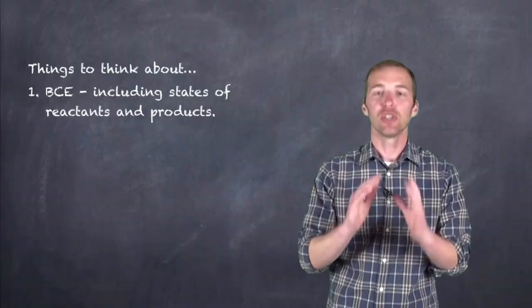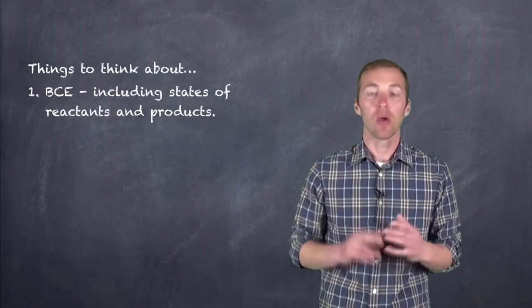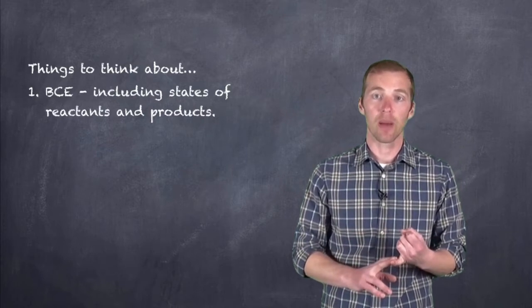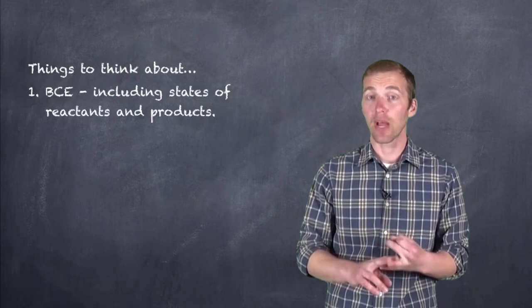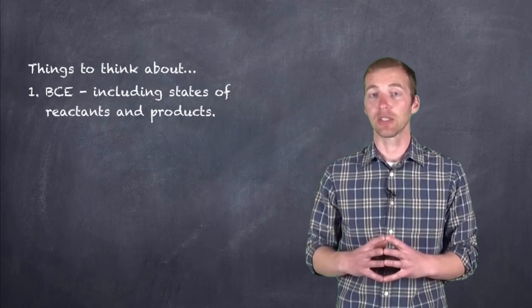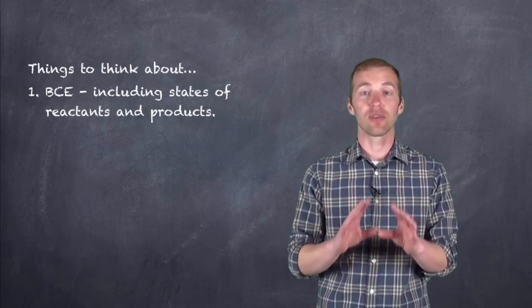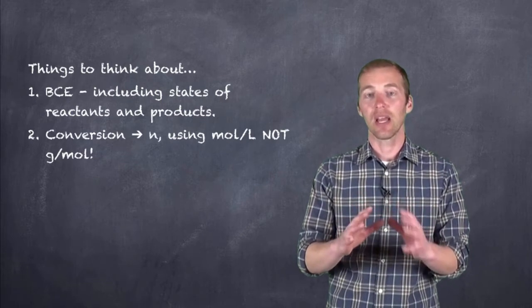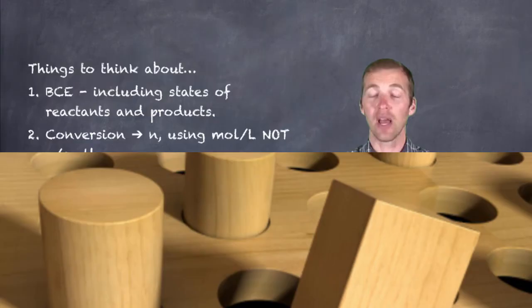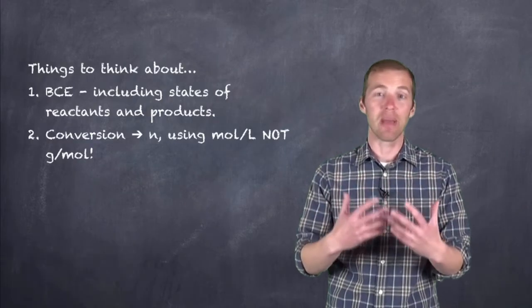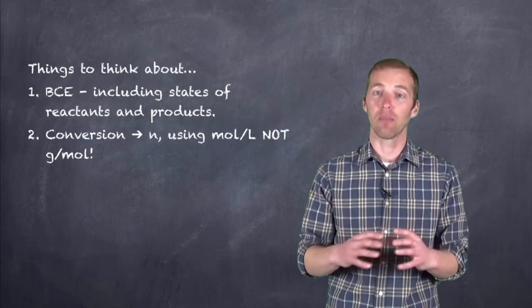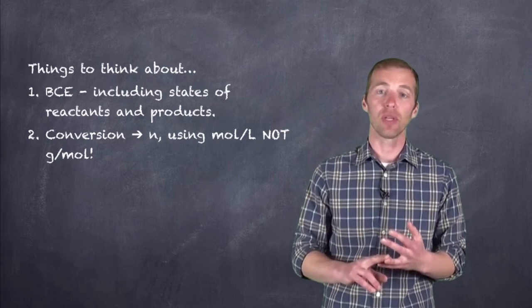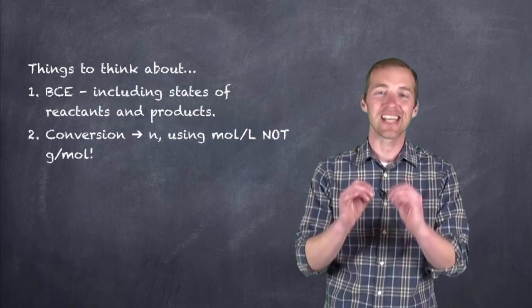The first key to these types of problems is the balanced chemical equation. Without an appropriately balanced chemical equation, your mole ratios will not be correct, your coefficients will not be correct, which could potentially throw off your limiting reagent calculations. The second thing is the conversion — we have to be aware that this is a solution. We cannot try to figure out the mass of the solution and divide by molar mass; please do not fall into that trap.